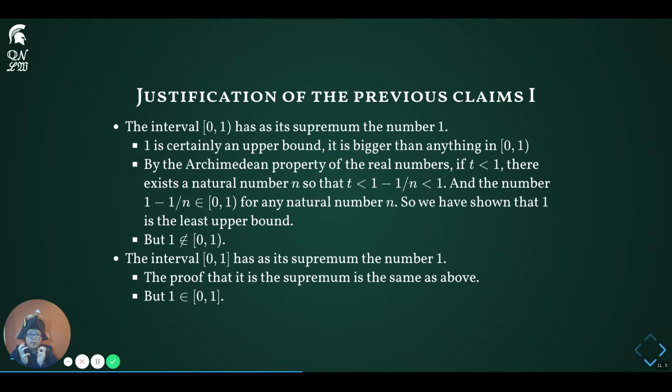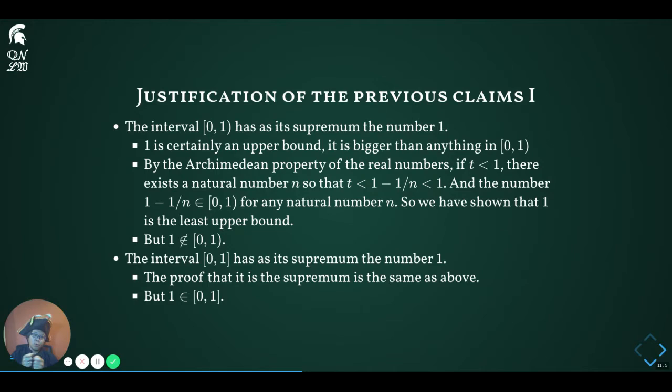Finally, by definition, 1 is not an element of (0,1) since the interval is open at 1. For our second example, we look at the interval from 0 to 1 closed at both ends. Exactly the same proof shows that 1 is the supremum of this interval. However, our interval now includes 1 as an element. So we see that the supremum of a set may both be in the set or outside of the set, depending on which set you are considering.